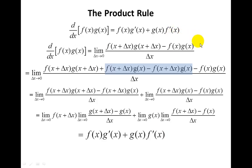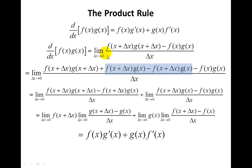We start this proof by going back to the definition of a derivative, which is the limit of the difference quotient. All I did was take this product, which is a function of f and g, and plug it into the difference quotient. So I've got f(x + Δx) times g(x + Δx), minus f(x)g(x), all over Δx, as the limit as Δx goes to zero.